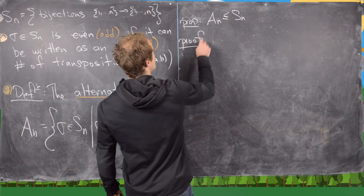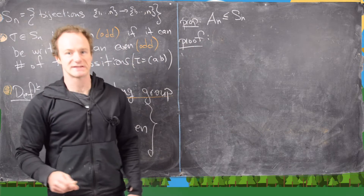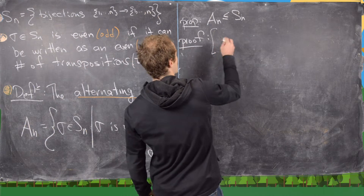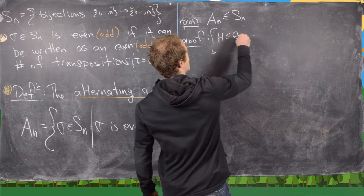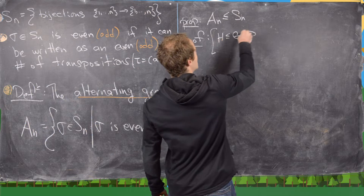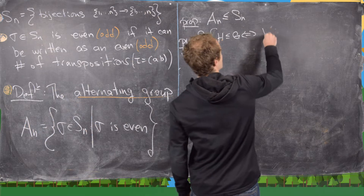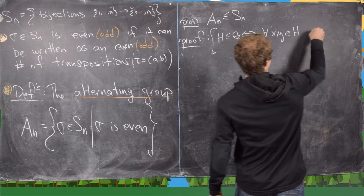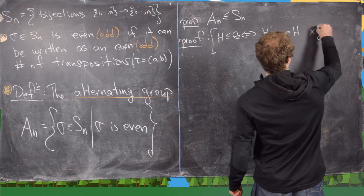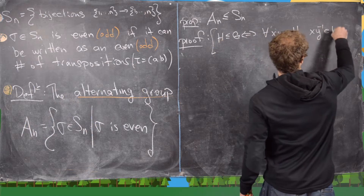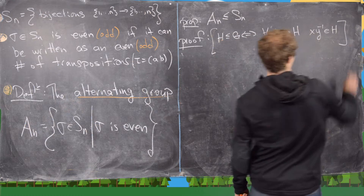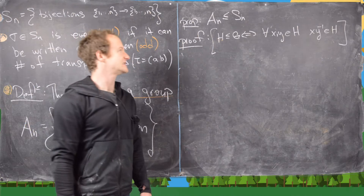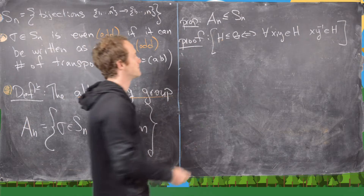We're going to do this by the subgroup test. Recall that H is a subgroup of G if and only if for all x and y in H, we know x·y⁻¹ is also an element of H. This will be the easiest way to prove that An is a subgroup.